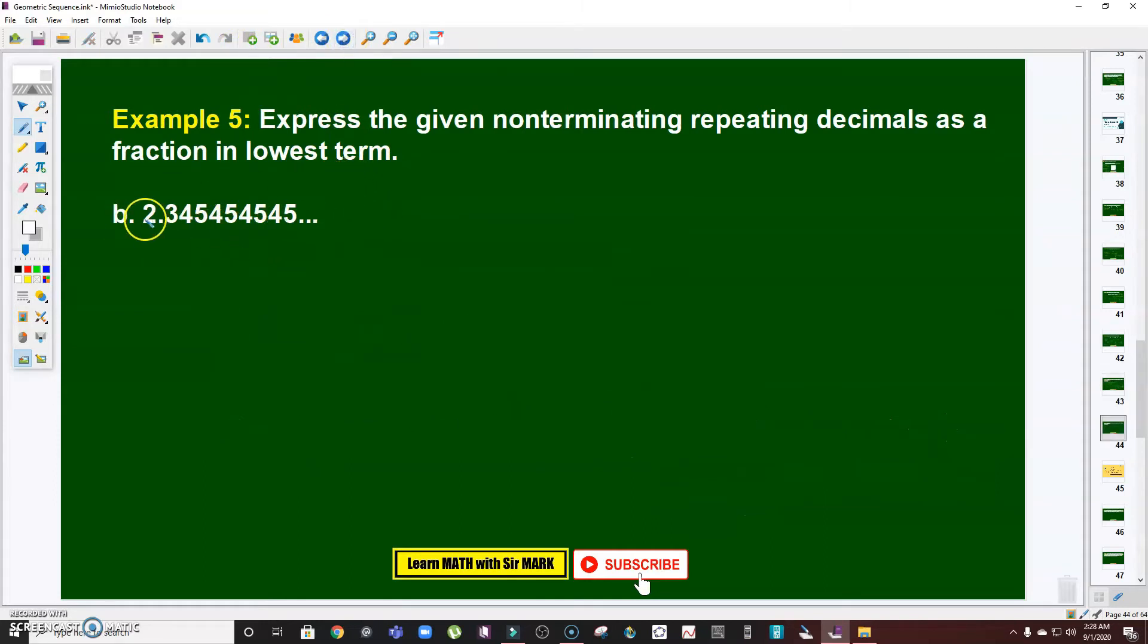Let's have the last problem in this video. Same thing: express 2.345454545 and so on as fraction in lowest term. Now look, the repeating decimals occur after 2.3, right? So therefore this is just the same as 23 over 10, and 23 over 10 is 2.3.